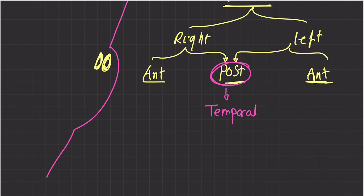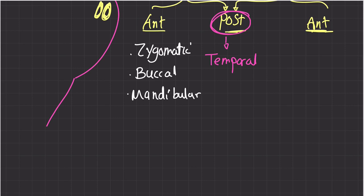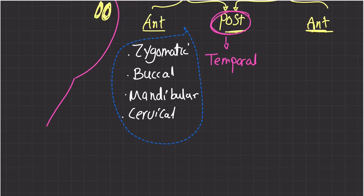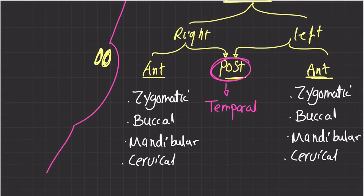The temporal nerve receives impulses from both the right and left posterior divisions simultaneously — bilaterally. On the other hand, the anterior division, either right or left, sends impulses to multiple branches: zygomatic, buccal, mandibular, and cervical. This applies to both sides.